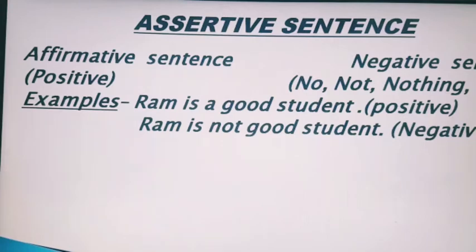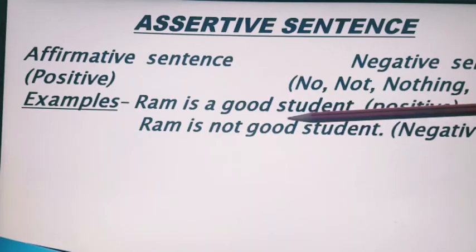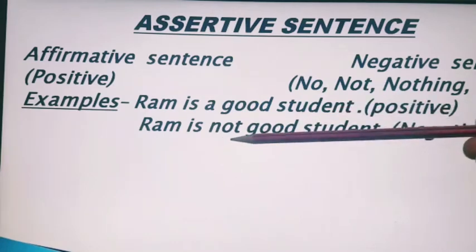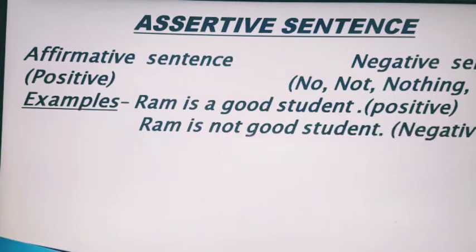Aur affirmative sentences kaun se hote hain? Jinmein aapko positivity show ho rahi ho. Example: 'Ram is a good student' — Ram ek achha student hai, ismein positivity show ho rahi hai, koi cheez impose nahi ki ja rahi — yeh ek simple affirmative sentence hai. Iska negative kya banega? 'Ram is not a good student' — ismein 'not' aa gaya, to yeh assertive sentence ka negative type hai.